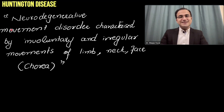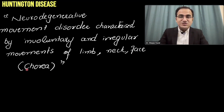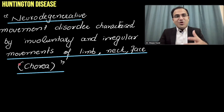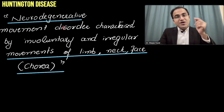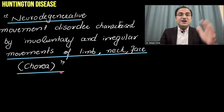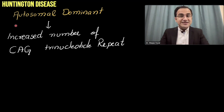Huntington disease is a neurodegenerative movement disorder characterized by involuntary and irregular movement of the limbs, neck, and face. This is called chorea — dance-like, irregular involuntary movements.